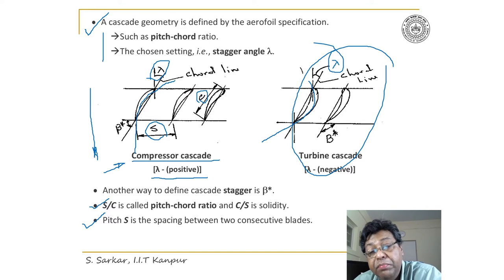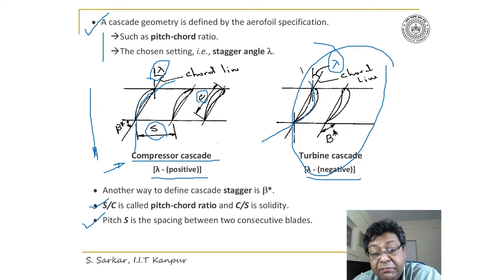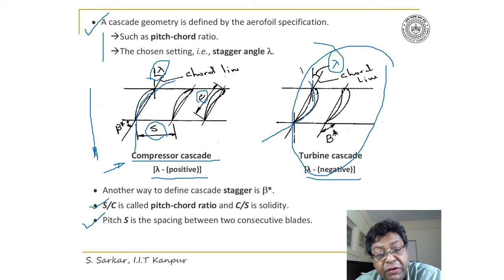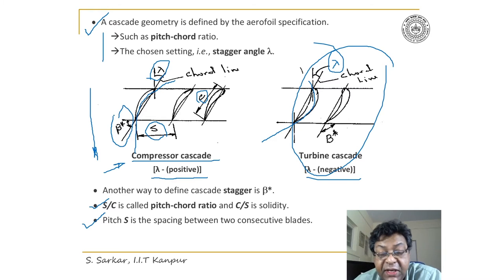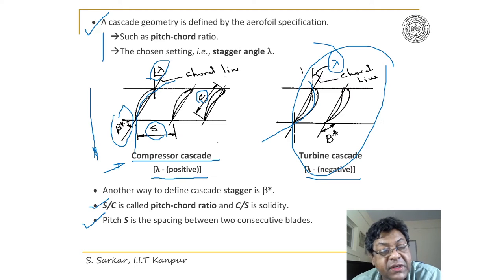To make the turbine blades and the compressor blades have opposite orientation, we often define lambda as negative for a turbine cascade. However, another way to define the stagger is by the quantity beta star. Beta star is the angle made by the chord line with respect to the tangential direction. If we define stagger by beta star, then for a compressor cascade beta star will be always less than 90 degrees, and for a turbine cascade beta star will be greater than 90 degrees.